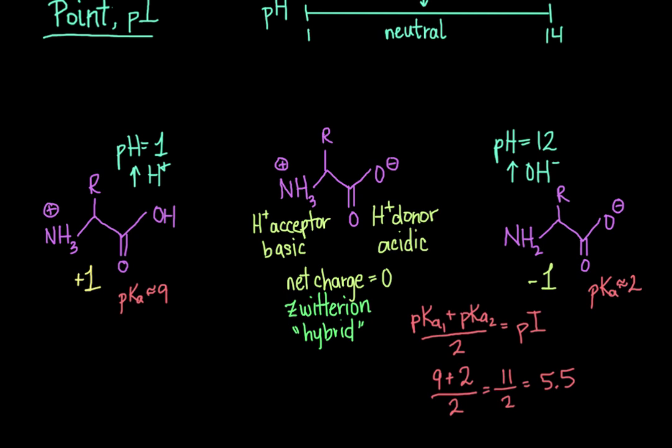But say our amino acid has a side chain or an R group that is also a functional group. Then we would also have to take the pKa for that group into account when we calculate the isoelectric point.